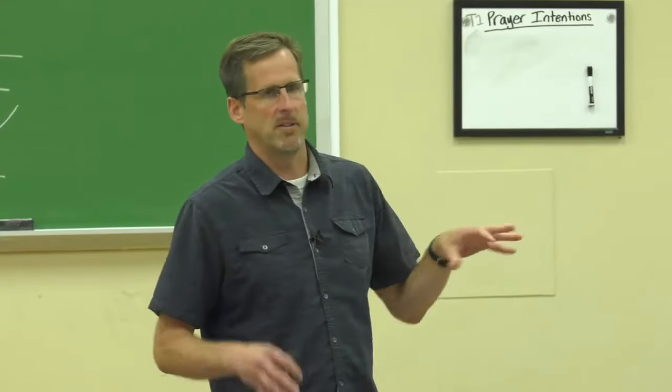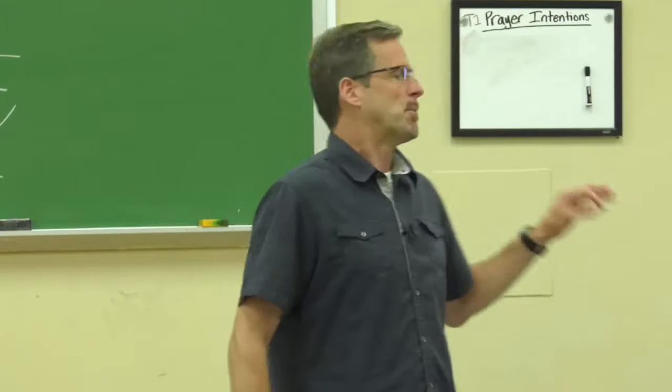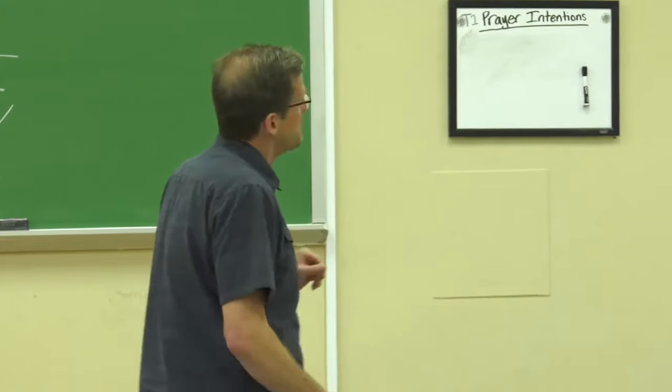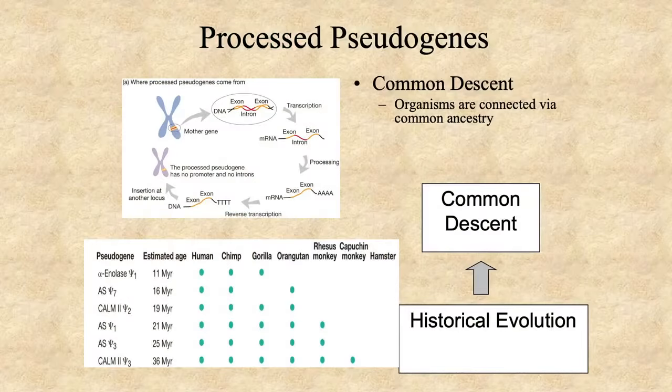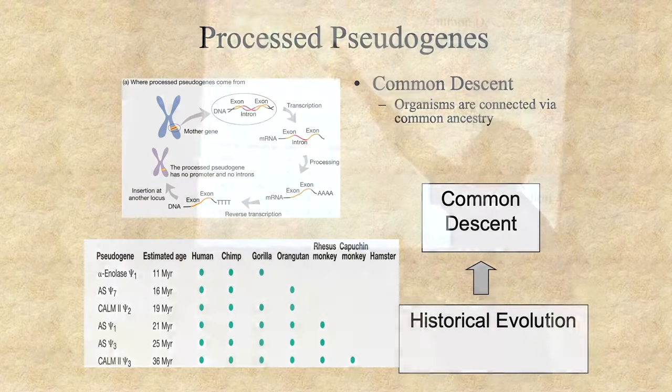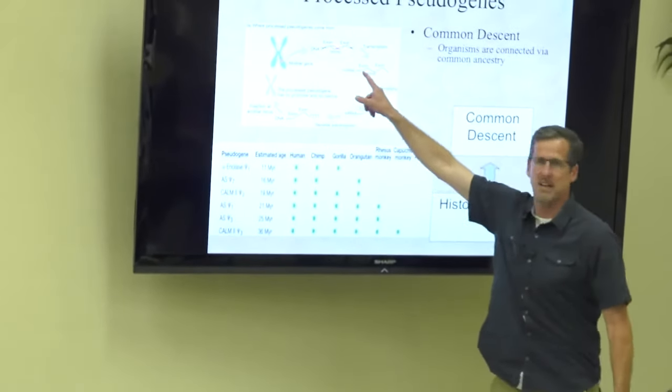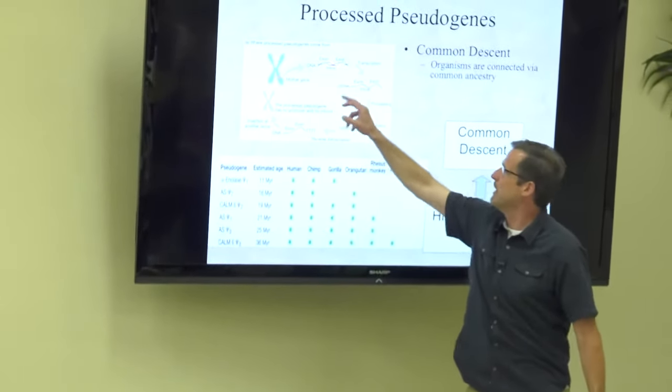So processed pseudogenes, just briefly, is that you can see up here. I'm going to walk over here and just point this out. Here's a gene on a chromosome. It's got these exons and introns in it. When it gets converted from DNA to RNA to make the protein here, you splice out the introns. In the average human gene, there's about nine to ten of them. But you get this processed RNA right here, and this is usually used to make a protein.